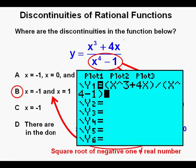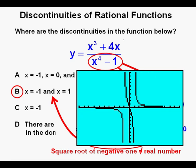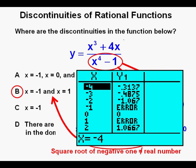We can also graph: the function is entered in the function editor with numerator and denominator wrapped in parentheses. Pressing graph or zoom 6 shows two apparent vertical asymptotes on either side of the y-axis. Checking the table view by pressing 2nd then graph, we see errors at x equals negative 1 and at x equals 1, confirming B as our correct answer.